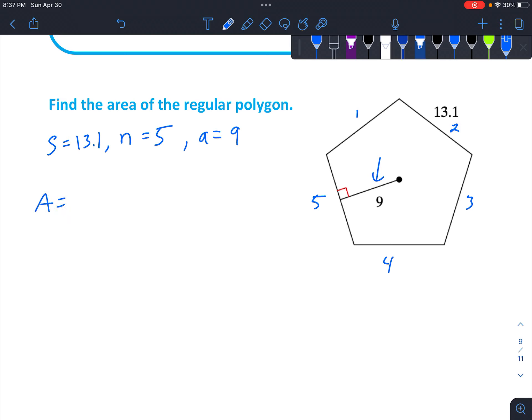Now we're going to say A equals. Just remember A equals one-half times the answer. I usually prefer just to write it as divided by two instead of multiplying by one-half. So I'm going to say A is nine. N is five. S is thirteen point one.